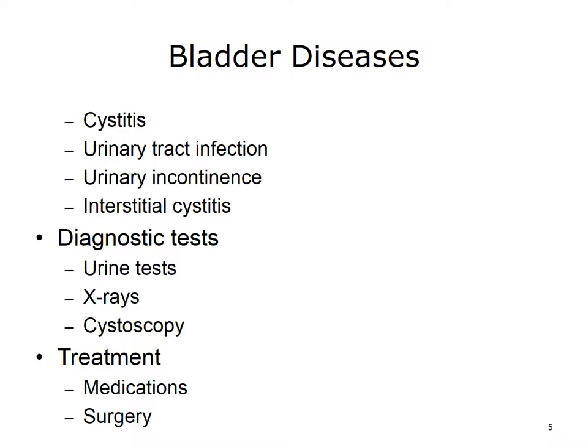Urinary incontinence refers to the loss of bladder control. Interstitial cystitis is a chronic problem in which the bladder wall can become inflamed and irritated, leading to frequent painful urination. Diagnostic tests include urine tests, x-rays, and examination of the bladder wall with a device called a cystoscope. Treatment varies depending on the cause of the problem. It may include medications and, in severe cases, surgery.